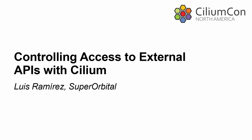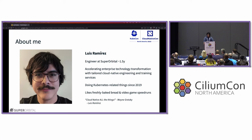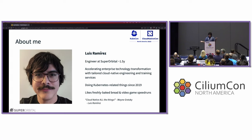A little bit about me. I've been an engineer at Superorbital for about one and a half years. At Superorbital, we try to accelerate our clients' cloud-native engineering using tailored training and engineering services. I've been personally doing Kubernetes things since 2019, and I like freshly baked bread and beta game speedruns.